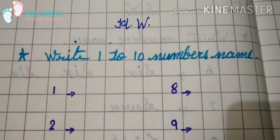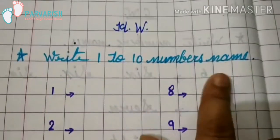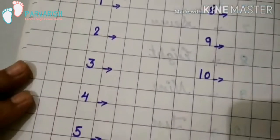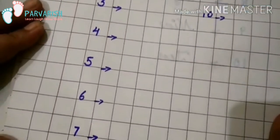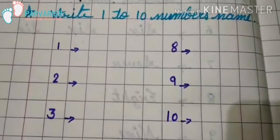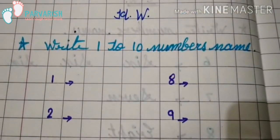It is your homework: write 1 to 10 number names in cursive writing. In classwork, 6 to 10 number names. In homework, 1 to 10 number names. Thank you.